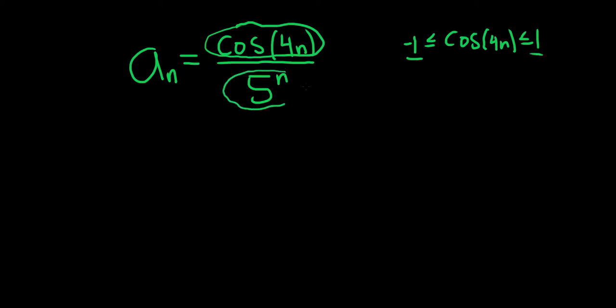And when n gets big, the bottom piece gets bigger and bigger because it's an exponential function. So what happens is your fraction gets smaller because the bottom is getting big.